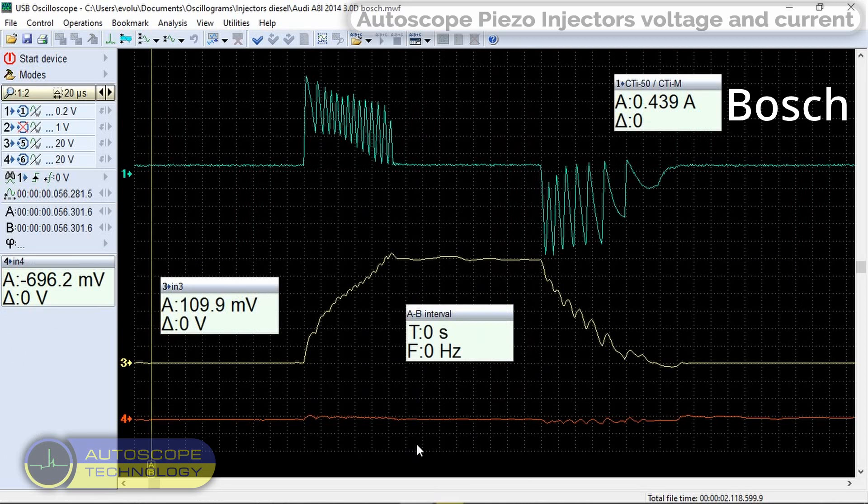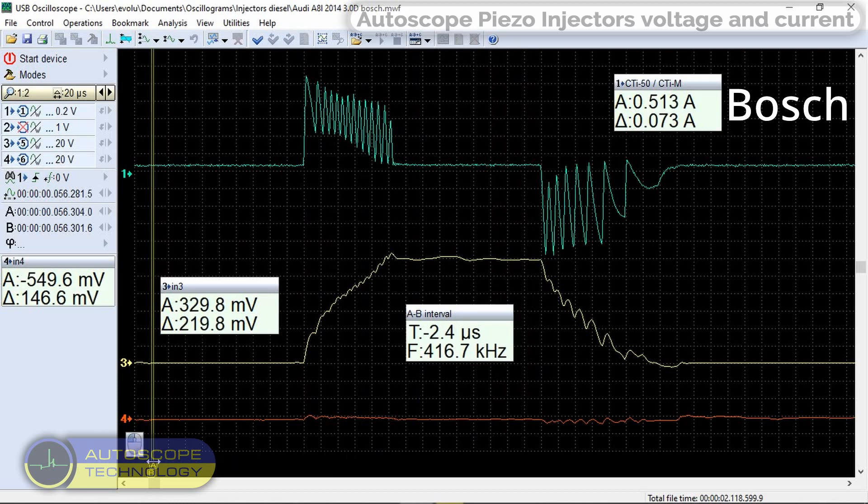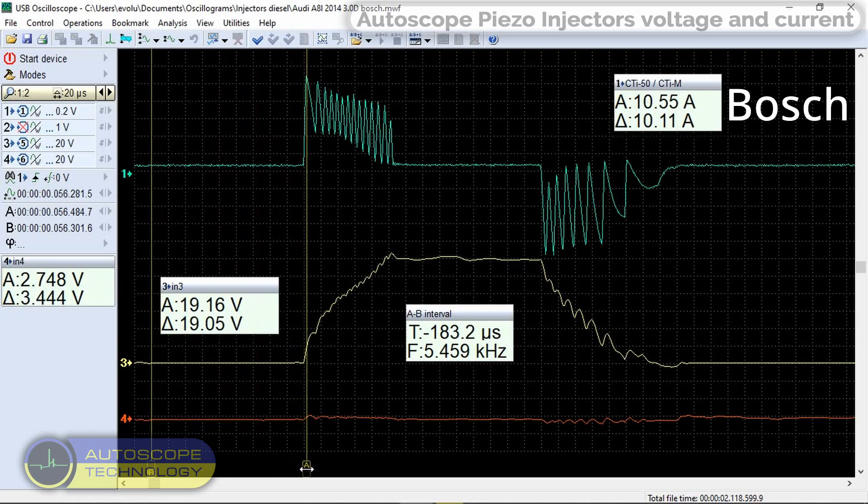Let's place the measuring panels so that it is convenient for us to observe the parameters of the control pulses. Using cursor A, we measure the control current. The maximum current here exceeds the value of 10 amps.